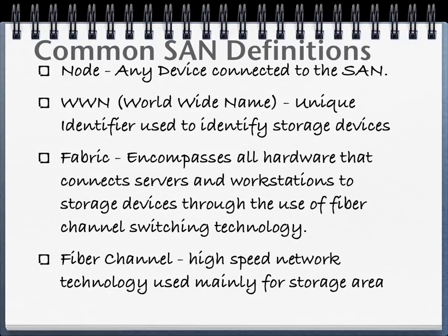Fabric pretty much encompasses all hardware that connects servers and workstations to storage devices through the use of fiber channel switching technology. The fabric is what encompasses all of the components that literally makes a SAN work. Fabric channel is a high-speed network technology used mainly for storage area networking — in the networking world you can think of this as a TCP/IP protocol.